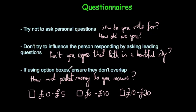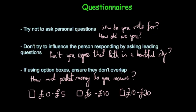If you use option boxes, ensure they don't overlap. For instance, how much pocket money do you receive? Zero to five pounds, zero to ten pounds, ten to twenty pounds. There are a few problems. This box and this box both cover from zero — zero to five and zero to ten — so if you had one pound, you could tick either box. Also, there's an overlap between zero to ten pounds and ten to twenty pounds; if you had ten pounds, you could tick either box. So make sure option boxes don't overlap.